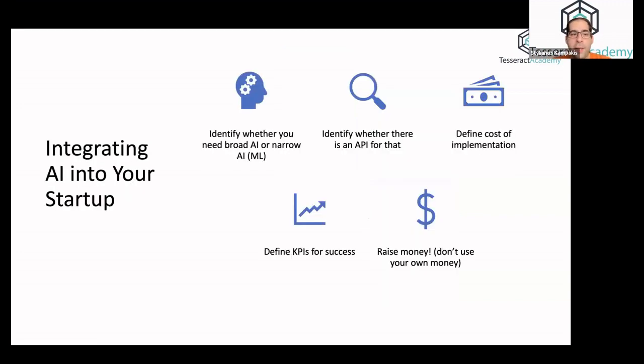So how can you integrate AI into your startup? One way to do it is to identify whether you need AI, broad AI or narrow AI. Identify whether there is an API for that. If there is an API for that, then it might be good to consider it, but obviously you have to decide on the pros and cons of using your own solution, open source solution versus using commoditized solution. As we progress, open source is becoming more and more accessible and easier to use. Then you obviously need to understand the KPIs, the cost of implementation, and how to use this information to raise money.